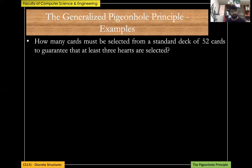Here's a slightly different example: how many cards must be selected from a standard deck of 52 cards to guarantee that at least three hearts are chosen? Now we want specifically three hearts, not just three of one suit. The worst case is choosing cards while avoiding hearts as long as possible.